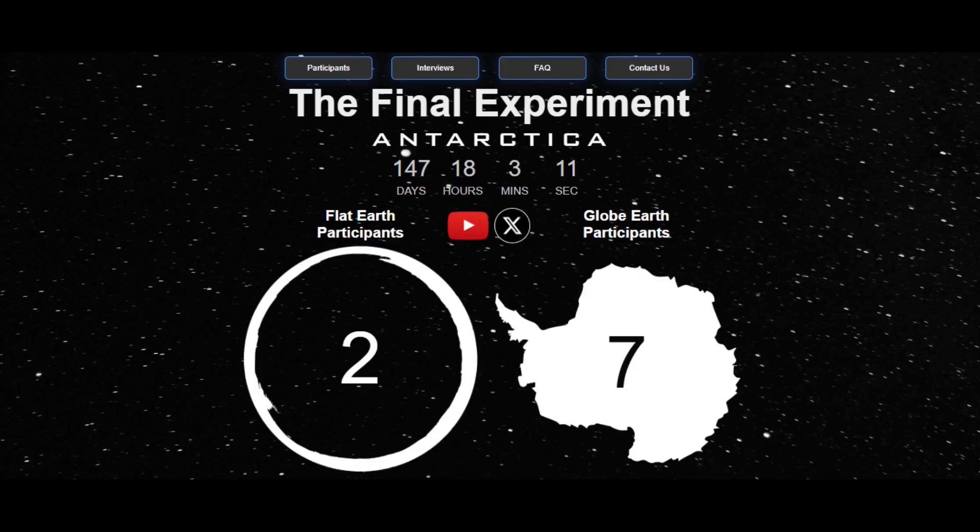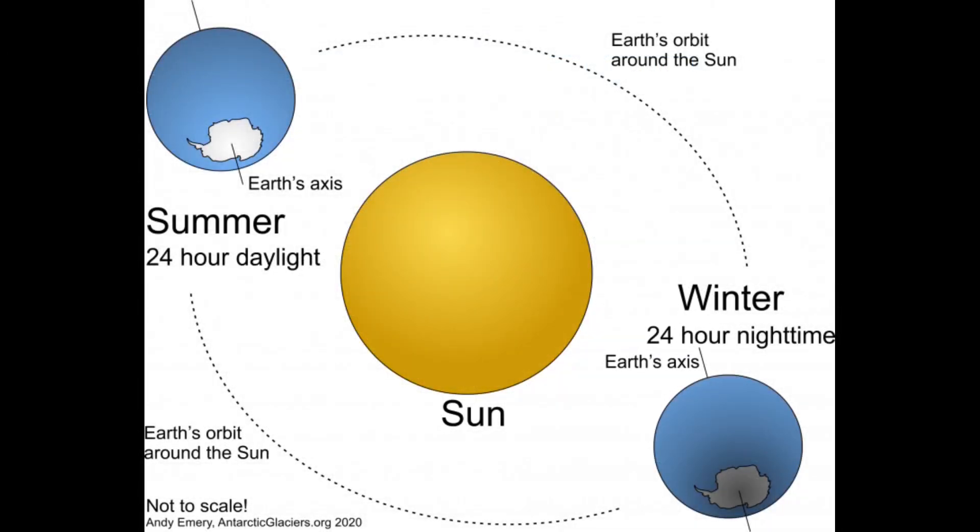Hello, flat Earth researchers, debaters and debunkers. A gaggle of globe Earth believers are heading off to Antarctica in December to see if they can observe a 24-hour sun, basically to see the sun doing a circle around them without ever actually setting. In their minds, this is the final experiment because it will apparently prove once and for all that the Earth must be a spinning globe if we can see a 24-hour sun in the south and then the same in the north at a different time of year.